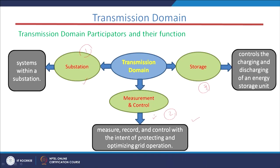Coming to the measurement and control section of this transmission domain, it basically measures, records, and controls with the intent of protecting and optimizing grid operation. Optimizing grid operation is very important. Our main aim is to optimize the operation of the smart grid, and for that we need a very secure, reliable measuring system, recording system, and control system.